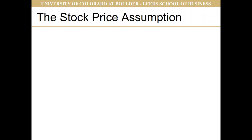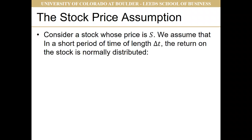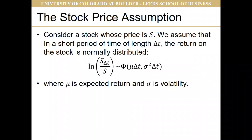The stock price assumption is a little deeper. We take a stock whose price is S, and we assume that over a short period of time — calling that delta T — the return on the stock is normally distributed. So the natural log of S(delta T), the stock in a little bit of time, divided by S — that's our log return — is normally distributed (phi denotes the normal distribution) with mean mu·delta T and standard deviation sigma²·delta T, where mu is our expected return and sigma is the volatility.